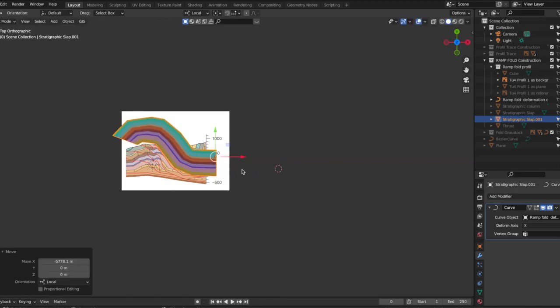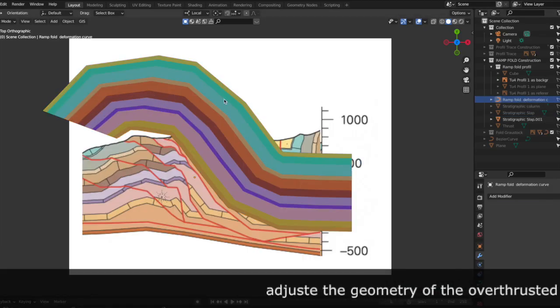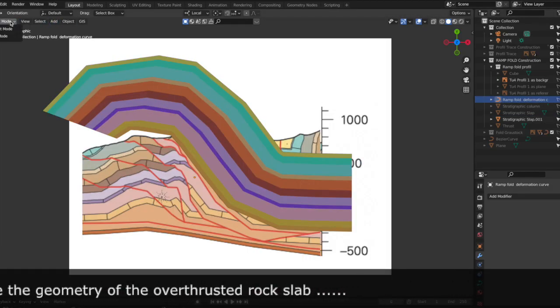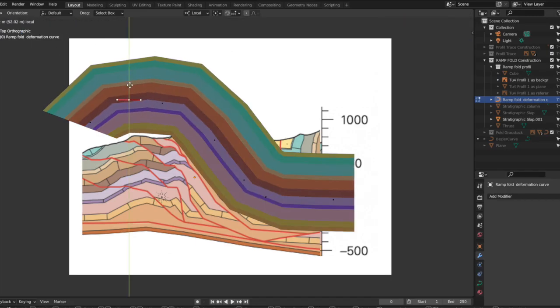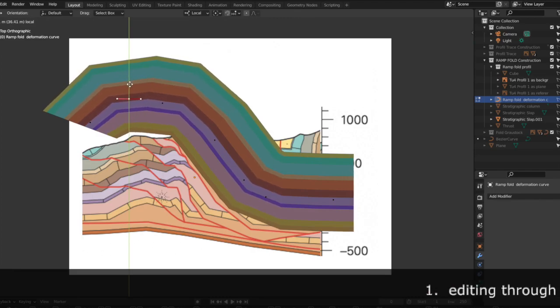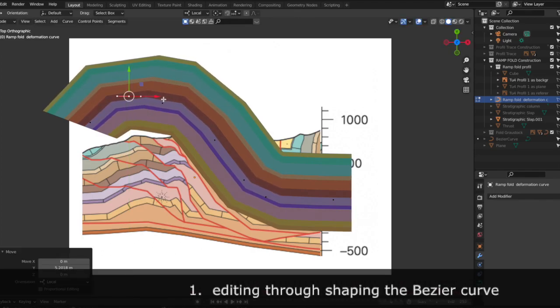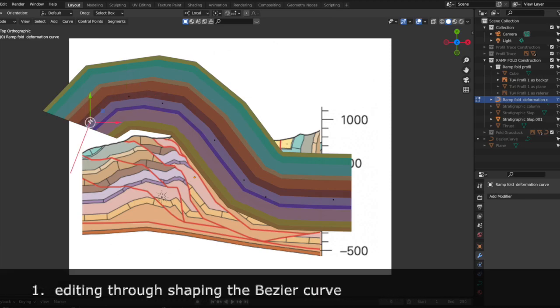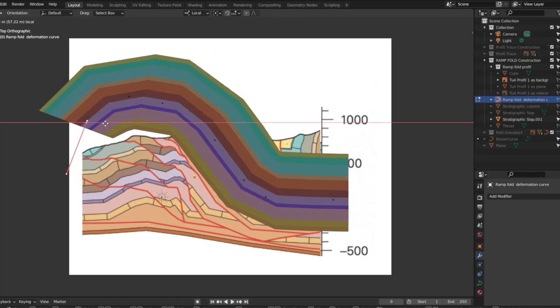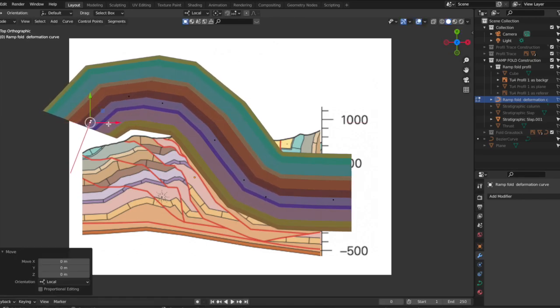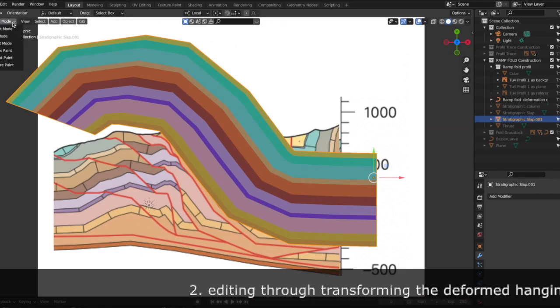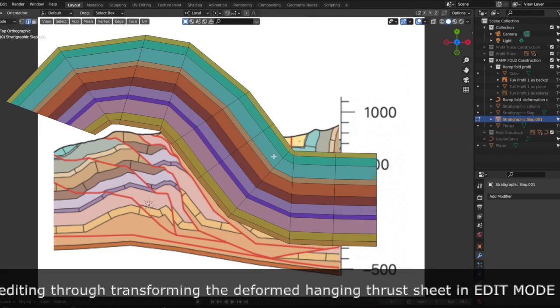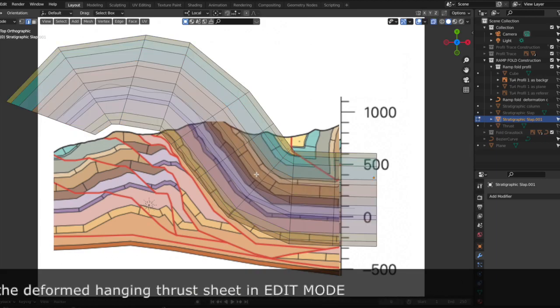You can edit the geometric shape of the overthrusted slab in two ways to match the geological model more accurately. Before pressing apply in the modifier, adjust the shape of the fold by editing the bezier curve. Or after pressing apply in the modifier you can select the rock slab and adapt the shape of the thrust sheet in edit mode.